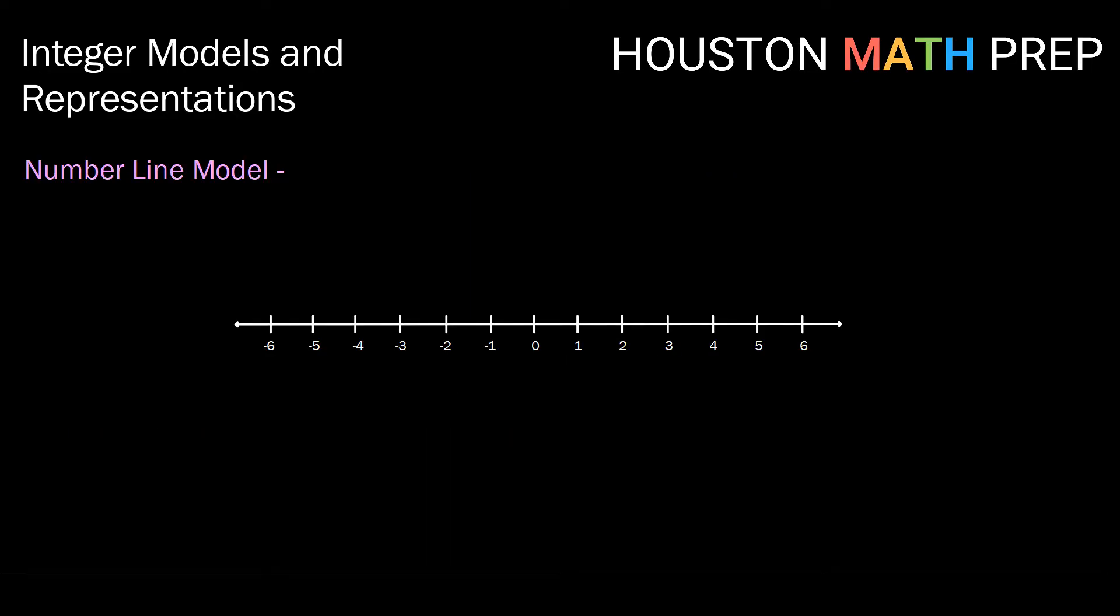Now starting to look at some of our models for the integers. The first model is our number line model. This model has us focusing on the center of our number line being at 0 and recognizing that positive numbers move to the right and negative numbers move towards the left.